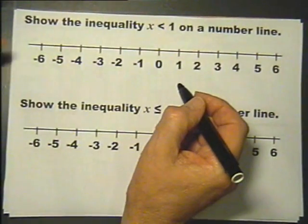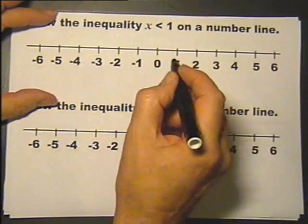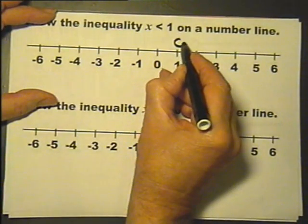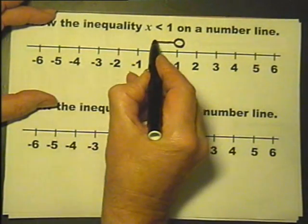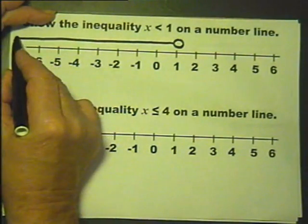A couple more to make the point really clear. I'm sure it is already but here we go. x is less than 1, so we draw a circle at 1, and we do less than. We continue the line for as long as the number line we've bothered to draw, maybe a bit more. There you go.